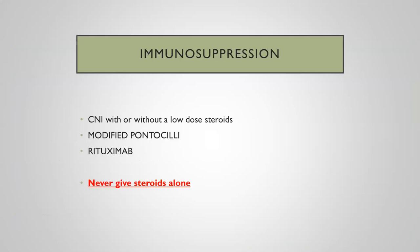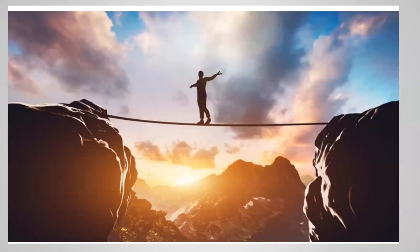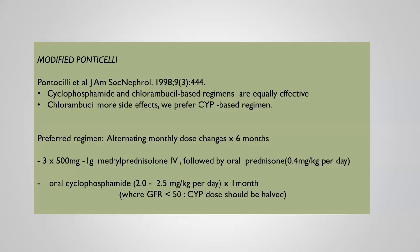For immunosuppression in membranous GN, options include CNI inhibitors with or without low-dose steroids — though steroids alone do not work. Other options are modified Ponticelli and rituximab. There is a very fine balance between treating patients effectively and causing harm through side effects, so we must think carefully before starting any immunosuppression.